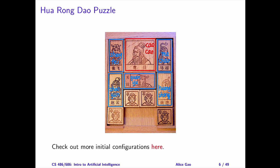This was the story of Huarong Dao. This puzzle shows Cao Cao trying to escape through Huarong Dao and the other people trying to stop him. Our goal is to slide the pieces horizontally or vertically until Cao Cao escapes from the bottom opening — in other words, we want to move Cao Cao to this 2x2 region. The puzzle has many other initial configurations; you can check out other initial configurations on the Chinese Wikipedia page.